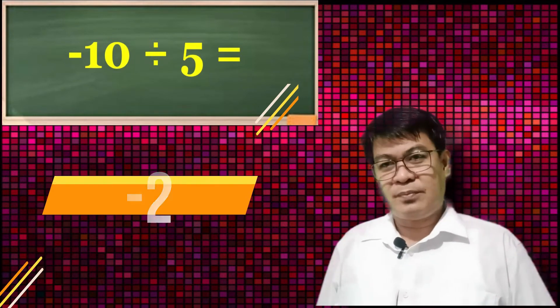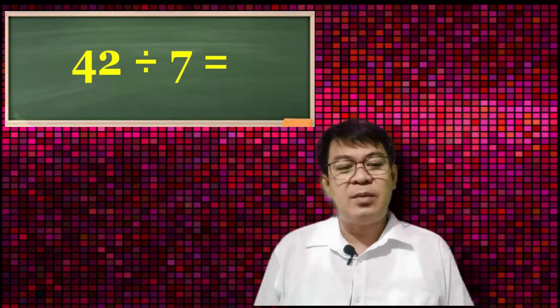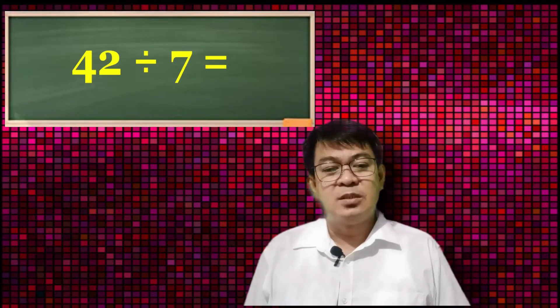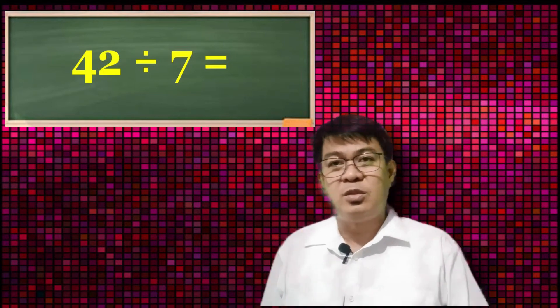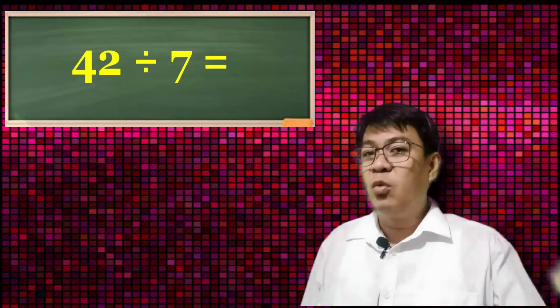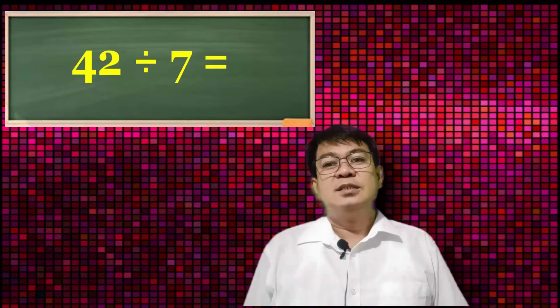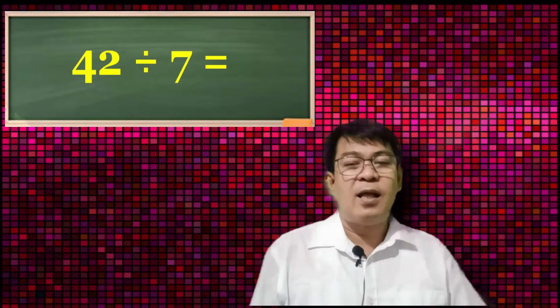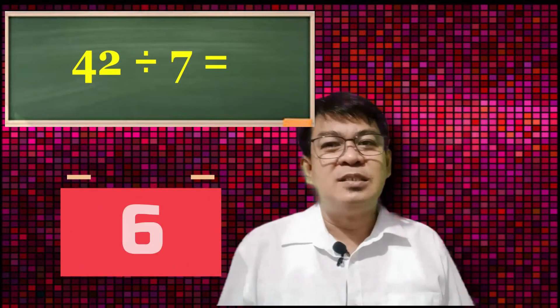Next one: 42 divided by 7. Both positive — positive 42 divided by positive 7. The answer is of course positive 6.